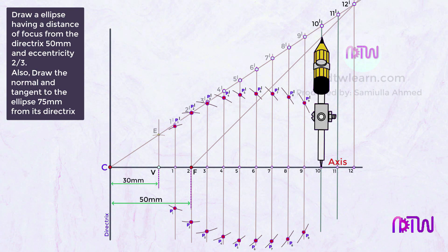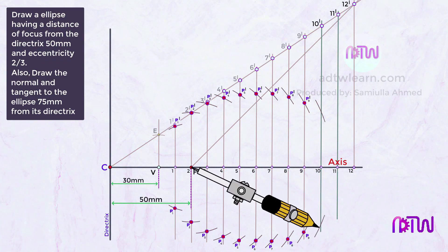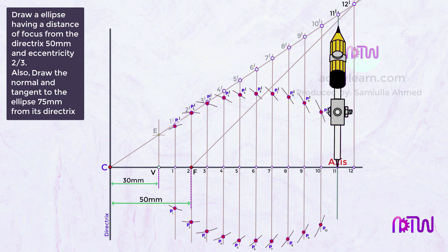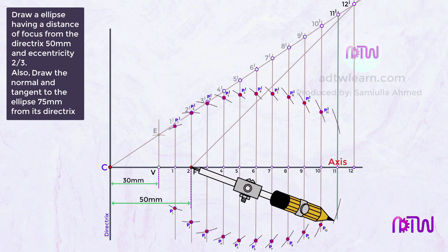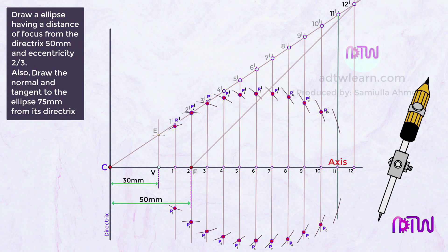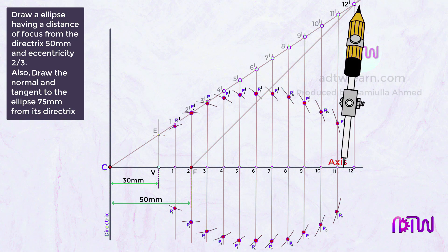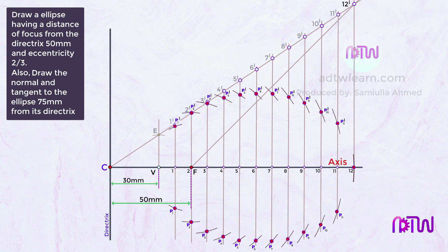Continue for points 10, 11, and 12. Take length 10 to 10', use F as center, cut arcs on the vertical through point 10, and mark P10' and P10. Do the same for point 11 to get P11' and P11. Finally, take length 12 to 12'; the arc cuts on the axis itself. Mark this point as P12.